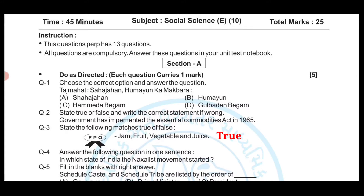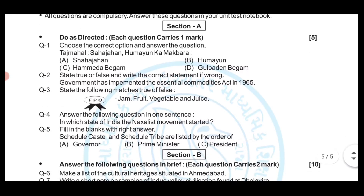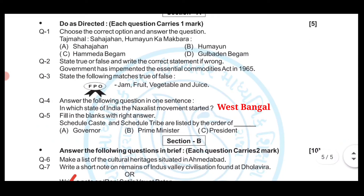Question number four: Answer the following question in one sentence. In which state of India did the Naxalite movement start? The answer is West Bengal.